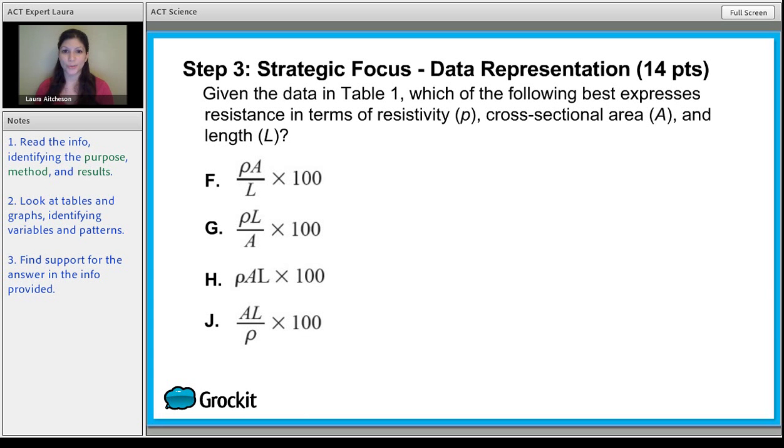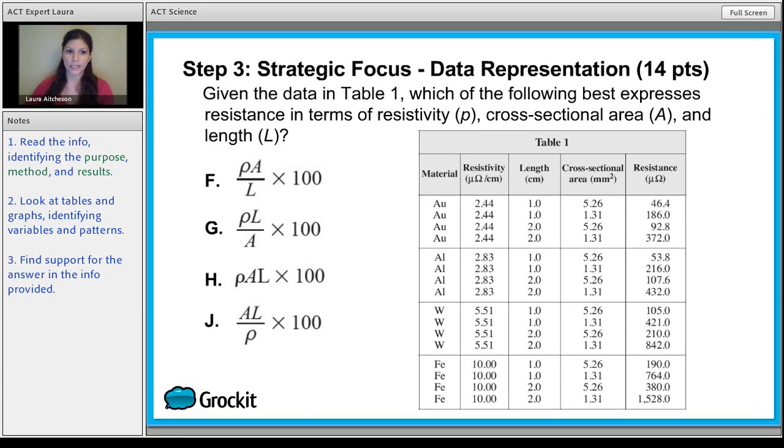Now for this particular one, it looks super complicated, but we're going to be able to use the table that they provide. Given the data in Table 1, which of the following best expresses resistance in terms of resistivity, cross-sectional area, and length? Here's the thing: resistivity is over here - don't get it confused with resistance. Length is here and cross-sectional area is here. We want all of that in the answer choices to equal this number. Let's just use the first row. We need 2.44, 1, and 5.26 arranged in some way that gives us 46.4.